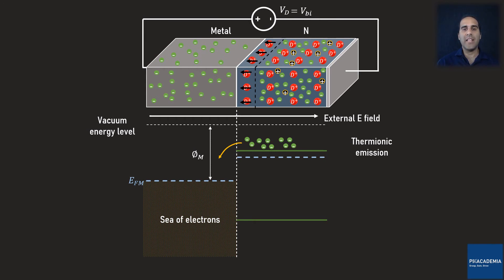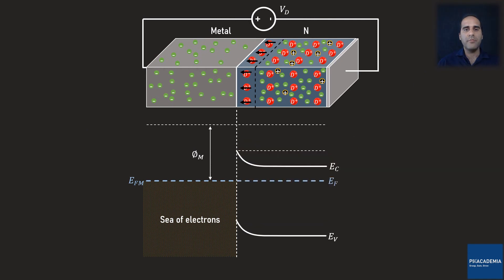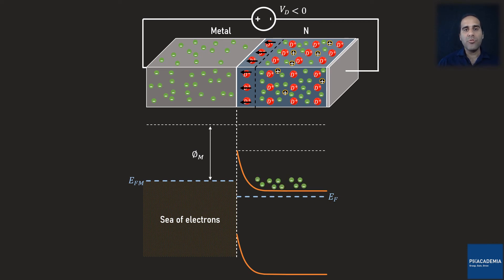Since the current flow is predominantly due to only one charge carrier — electrons — the Schottky diode is categorized as a unipolar rectifier. But what happens when the Schottky diode is reversely biased? As long as Vd is zero, the diode is in equilibrium and the energy diagrams remain similar to those of the unbiased diode. Once Vd is negatively increased, an external electric field is formed with a direction similar to that of the depletion region electric field. As a result, EC and EV are further bent down. Free electrons in the conduction band are facing a larger barrier to enter into the metal. In fact, no free electron in the conduction band can diffuse into the metal under reverse bias.